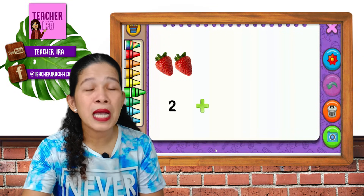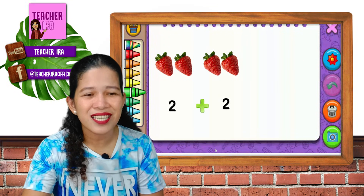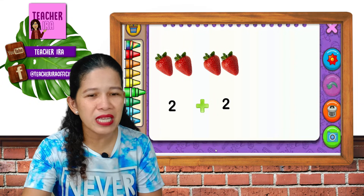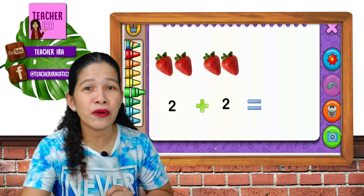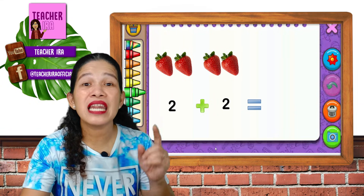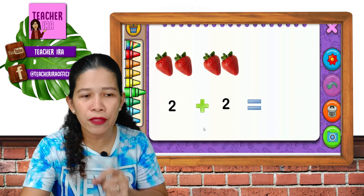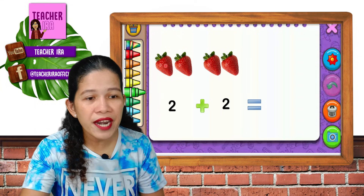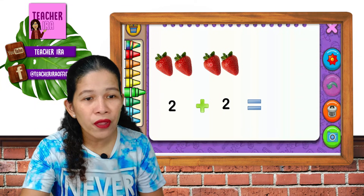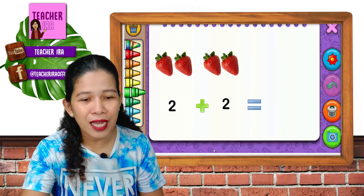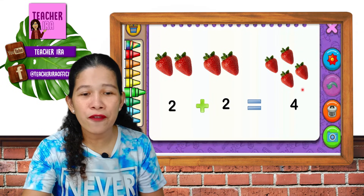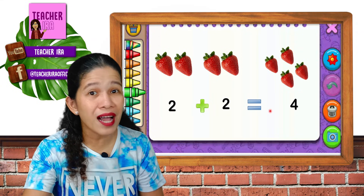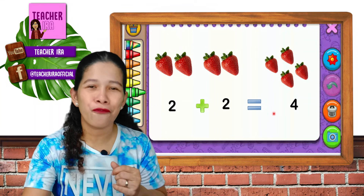Two strawberries plus two more strawberries equals? Let us count them together: one, two, three, four. Meaning two plus two equals four.